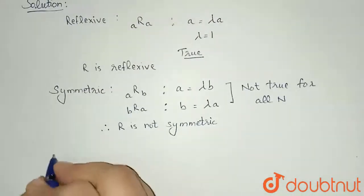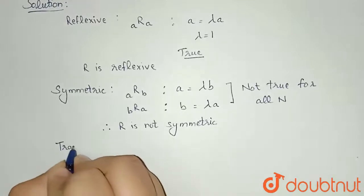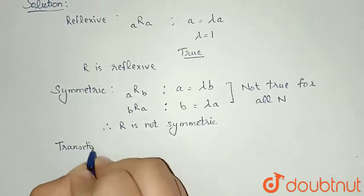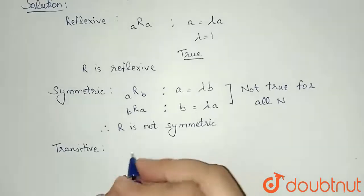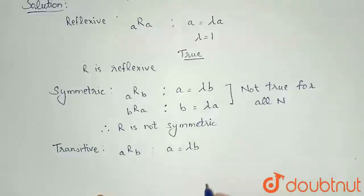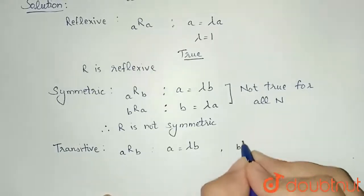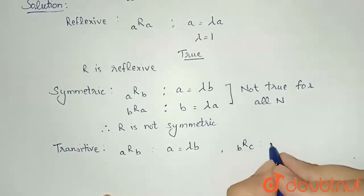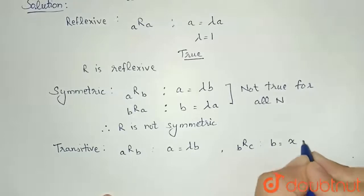And the third one we need to check is the transitive property of the relation R. For transitive property, I am taking a is related to b, that means a equals lambda times b, and we take b is related to some c, that means b equals x times c.